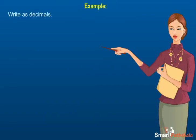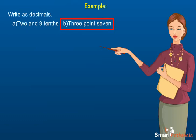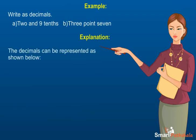Example: Write as decimals. A) 2 and 9 tenths. B) 3.7. Explanation: The decimals can be represented as shown below. A) 2.9. B) 3.7.